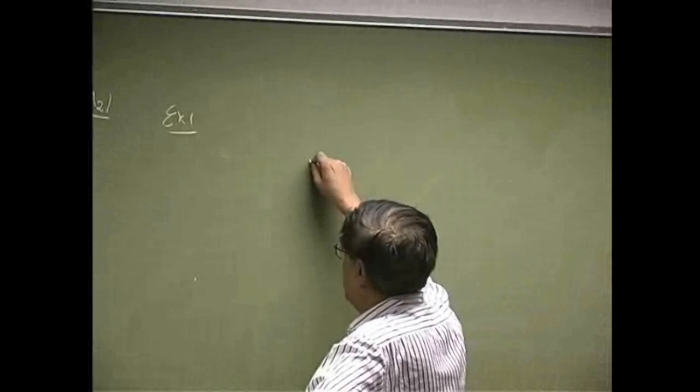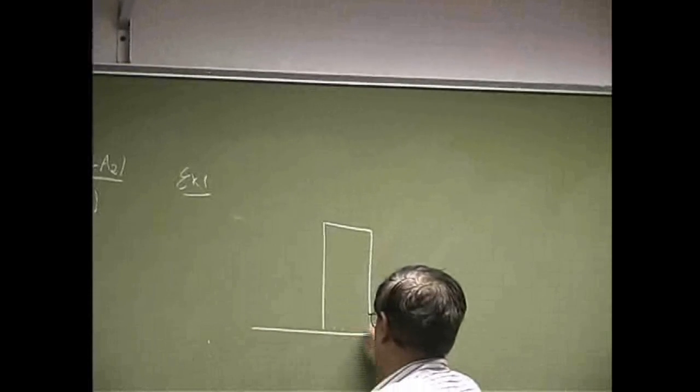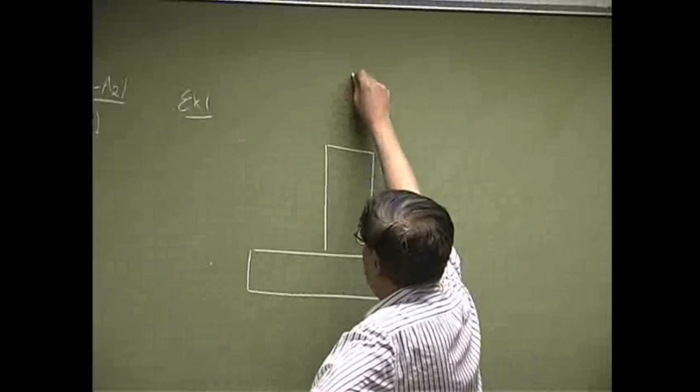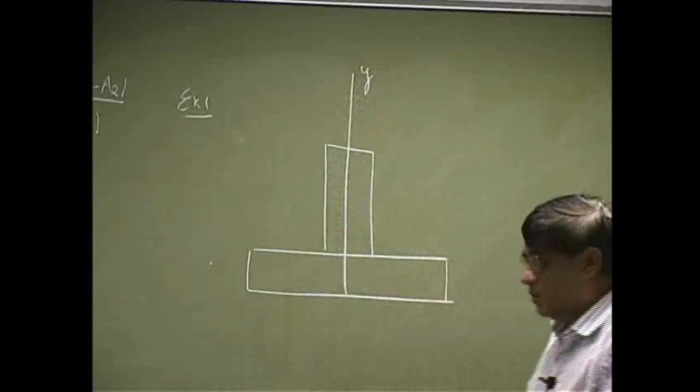So, if we have something like this, we got a rectangle or an inverted T section as the y-axis.